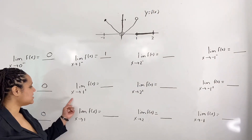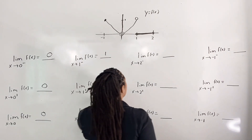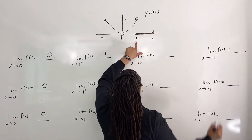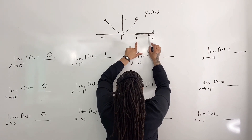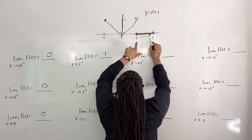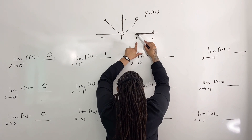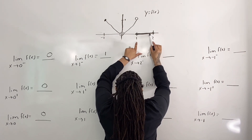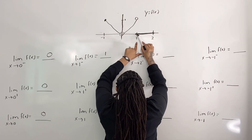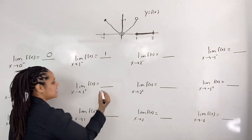Next, we evaluate the limit as x approaches 1 from the right. I place one hand by x equals 1 so that I know where to observe the graph horizontally. Then I place the other hand to the right of x equals 1, but somewhere on the graph. Then I travel the graph from right to left until my hand is almost in vertical alignment with the first hand. We see that as x approaches 1 from the right, the y value approaches 0. So the limit as x approaches 1 from the right is 0.